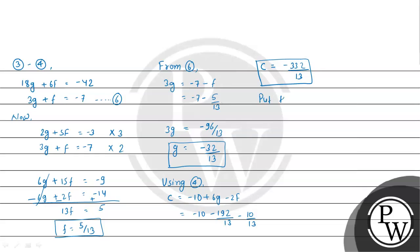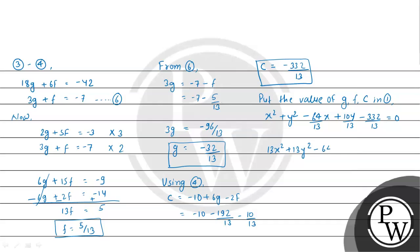Putting the values of g, f, and c into equation 1, with g = -32/13, we get the equation of the circle. Multiplying through by 13 gives 13x² + 13y² - 64x + 10y + 332 = 0.